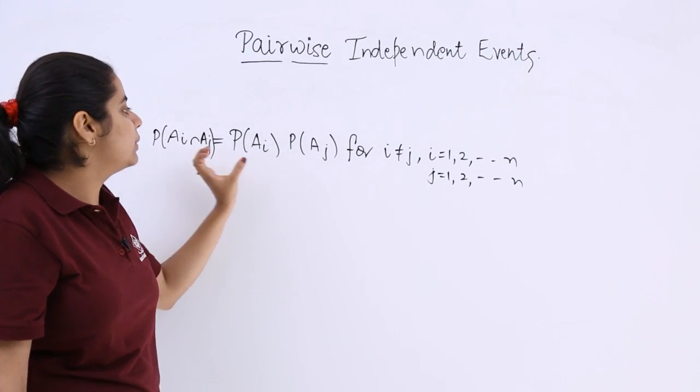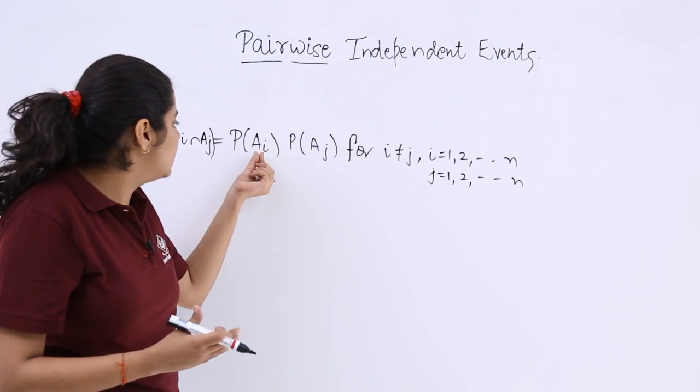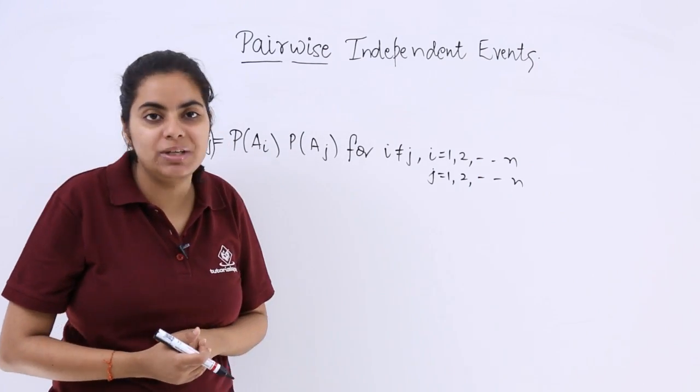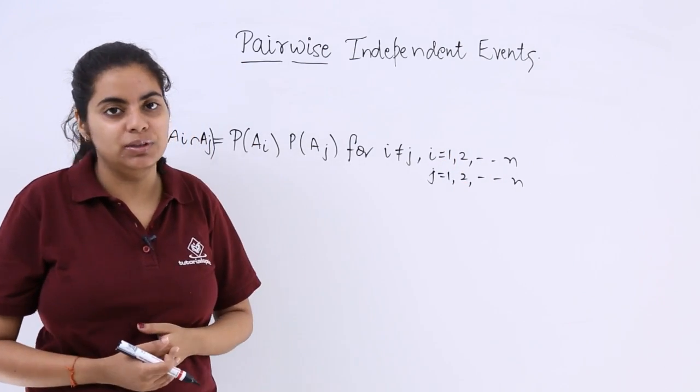That means the intersection's probability is equal to the product of individual probabilities, such that these i and j subscripts should not be equal and they may belong to any natural number.